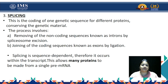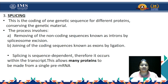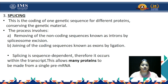Next comes splicing. Pre-messenger RNA contains both coding and non-coding regions. The non-coding regions are called introns and the coding regions are called exons. To make a mature messenger RNA containing only the information to be translated into protein, we need to remove the non-coding regions or introns. Splicing involves removing the non-coding sequences known as introns by the spliceosome, then joining the coding sequences known as exons by ligation.